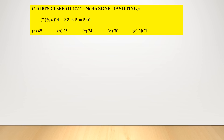Question: y% of 4 minus 32 × 5 equals 540. So y% of 4 = 160 + 540 = 700. Since 700 is greater than 4, y must be greater than 100. But none of the options given has a value greater than 100, so we can directly choose option number E, none of these — there is no need to solve this question further.